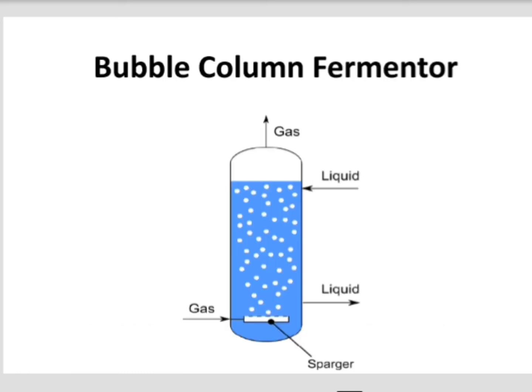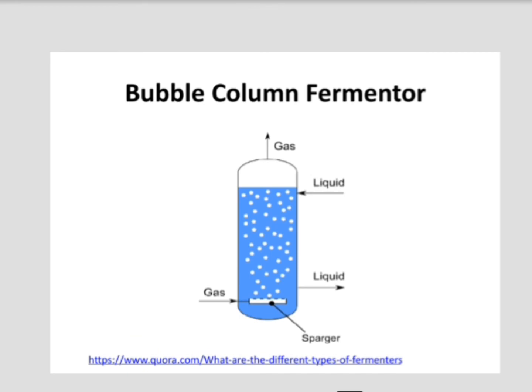This is the picture of a bubble column fermenter. It is a cylindrical vessel, and at the base we can see the sparger with perforated holes — a metal strip with perforations through which gas is fed in, forming bubbles inside the liquid. This type of fermenter is mainly used for the production of citric acid.